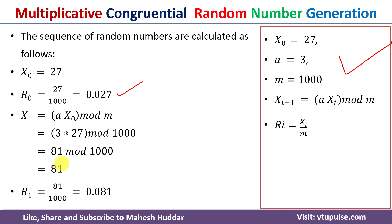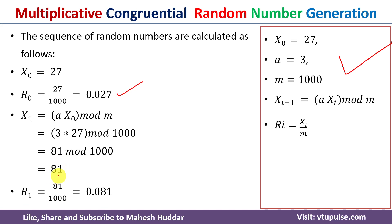Now we need to calculate R₁. R₁ = X₁ / m. Here X₁ = 81 and m = 1000, so 81 divided by 1000 equals 0.081. This is the second random number.